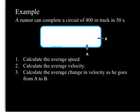Look at this example here. A runner can complete a circuit of 400 meter track in 50 seconds. So he can do this complete lap in 50 seconds. You have to calculate his average speed, average velocity, and then the average change in velocity as he goes from A to B.